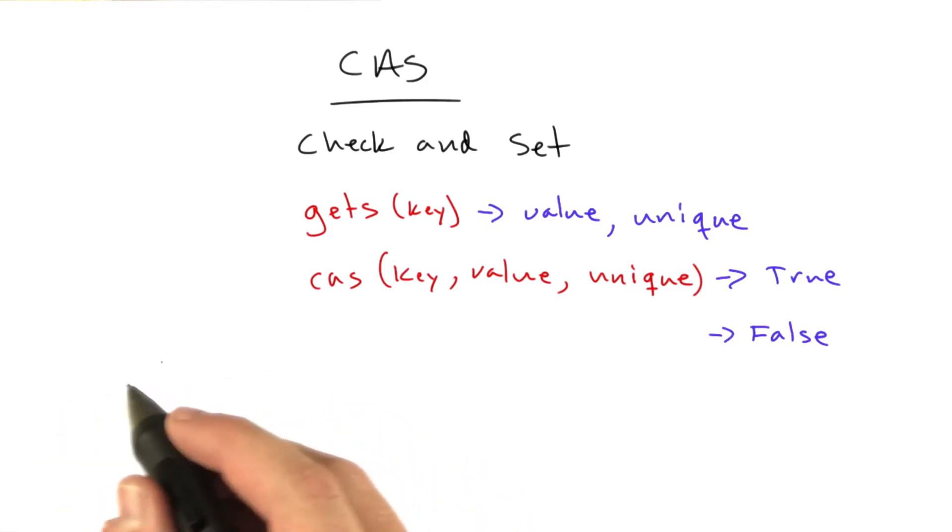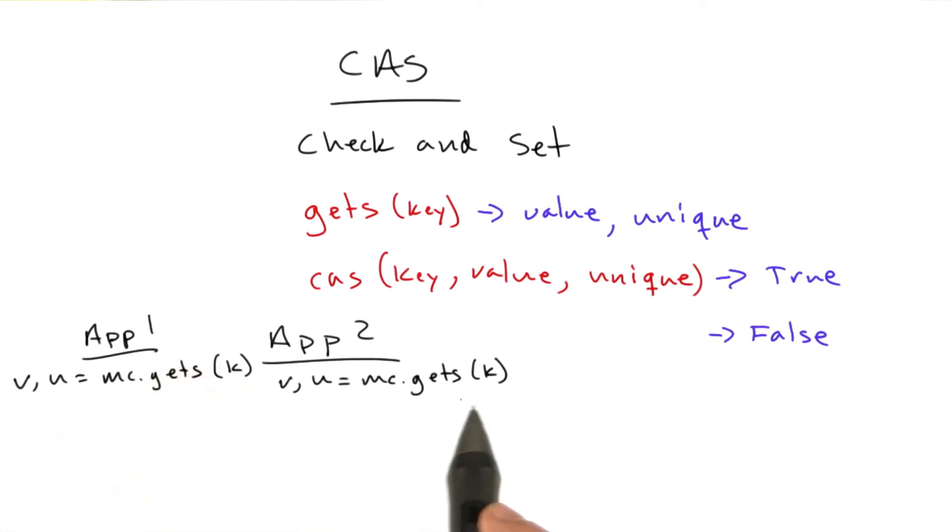So if we have two app servers, if they both run Memcached.gets on a particular key at the same time, they'll get two return values. They'll get the value, I'm going to call that v, and the unique we'll call that u. And if one of these app servers updates key by calling CAS, he wants to update key to the variable stored in y using the unique u, this will succeed. It'll return true.